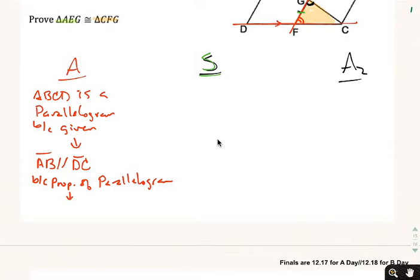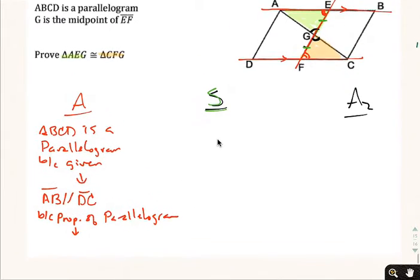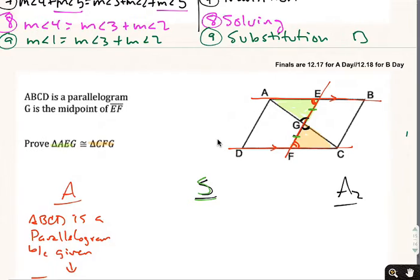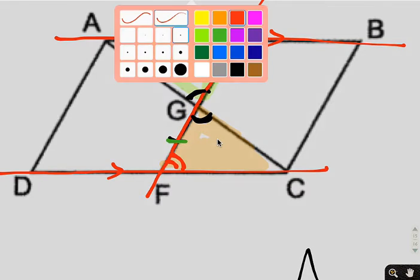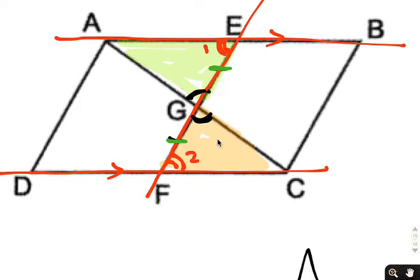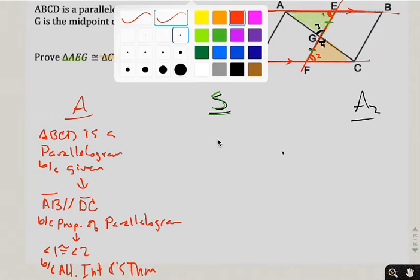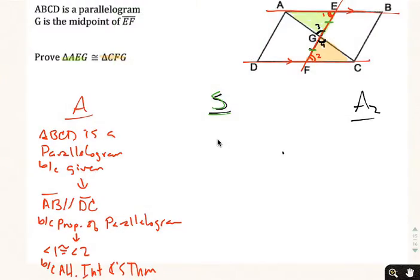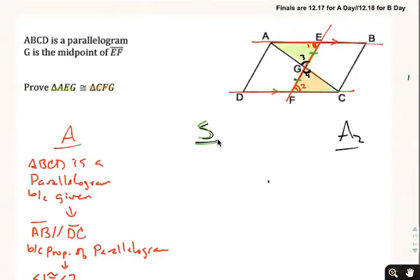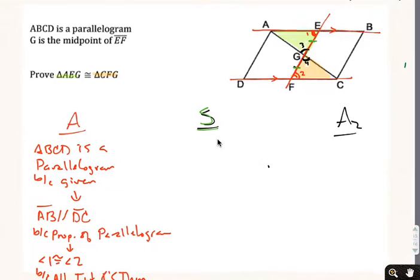If AB and DC are parallel, that tells me—let's pause here, let's go back and actually number these things so I don't have to use a three-letter naming convention. Let's go three and four. So that tells me angle one and angle two have to be congruent, and that's going to be because of the alternate interior angles theorem. You get a lot of usage out of that one.